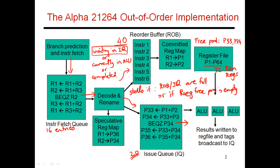There are stalls in the issue queue because an instruction can only leave when its operands are available. If everything currently executing is a long-latency instruction, there will be stalls for several cycles until something gets woken up and leaves the issue queue. There are also stalls in the reorder buffer when the oldest instruction has not yet finished. If the oldest instruction is a long-latency operation — say, a memory access taking 300 cycles — it cannot commit for a long time, introducing stalls in the reorder buffer.